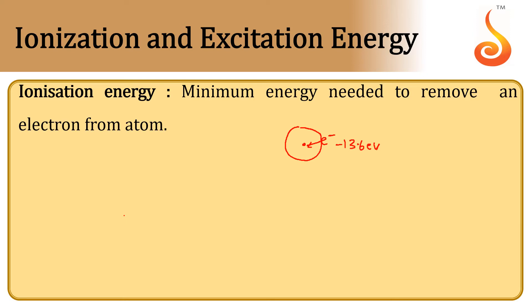So if I want to make a transition, or if I want to move an electron from the first orbit to the infinite orbit, where the energy of the electron will become zero — how much energy are we supposed to provide? We have to provide plus 13.6 electron volts. Therefore, the net energy of the electron becomes zero. This amount of energy we need to provide is called ionization energy — the energy needed to move an electron from its energy level to infinity.